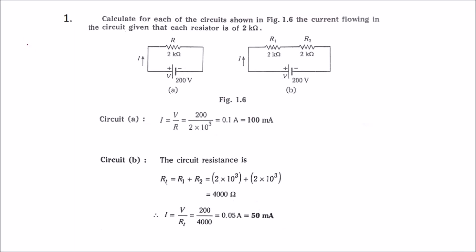In this video we discuss a few problems in DC circuits. Problem one: calculate the current flowing in each circuit shown in figure 1.6, where each resistor is 2 kilo ohms. In circuit (a), we have a single resistor of 2 kilo ohms and a voltage supply of 200 volts. Using I = V/R, that is 200 divided by 2000, the current is 0.1 amps, or 100 milliamps.